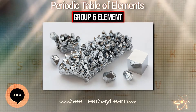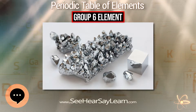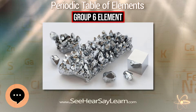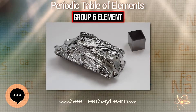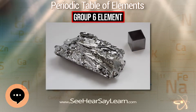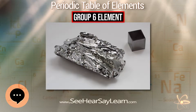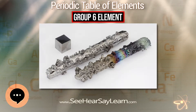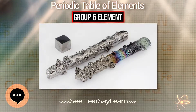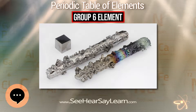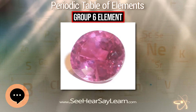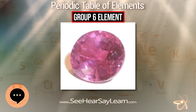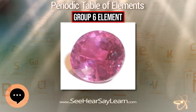Group 6, numbered by IUPAC style, is a group of elements in the periodic table. Its members are chromium, molybdenum, tungsten, and seaborgium. These are all transition metals, and chromium, molybdenum, and tungsten are refractory metals.